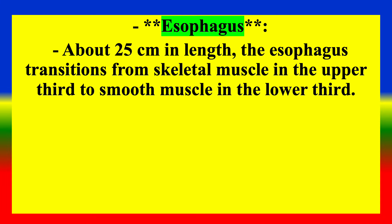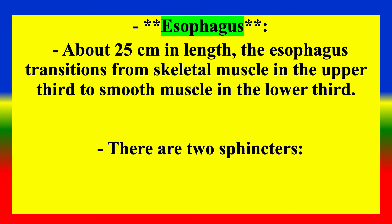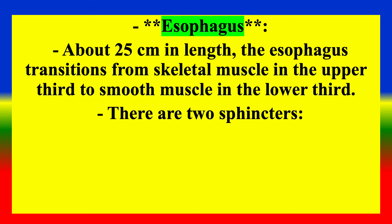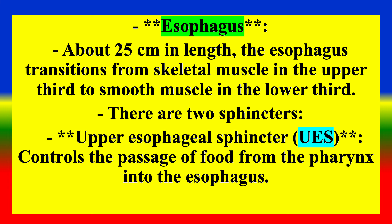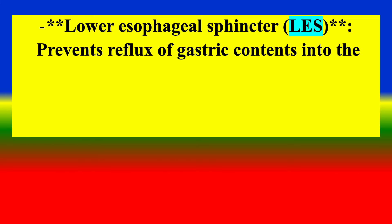Cross Anatomy — Esophagus: About 25 cm in length, the esophagus transitions from skeletal muscle in the upper third to smooth muscle in the lower third. There are two sphincters: the upper esophageal sphincter, which controls the passage of food from the pharynx into the esophagus, and the lower esophageal sphincter, which prevents reflux of gastric contents into the esophagus.